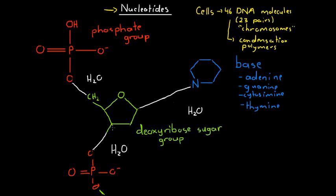At the top of our DNA molecule, we have an unbonded hydroxyl group. Throughout the DNA molecule, every hydroxyl group on every phosphate group is bonded via a condensation reaction. However, at the very end of our DNA molecule, this phosphate group has nothing to bond with, so this is the only phosphate group in the whole molecule that has an unbonded hydroxyl group remaining.